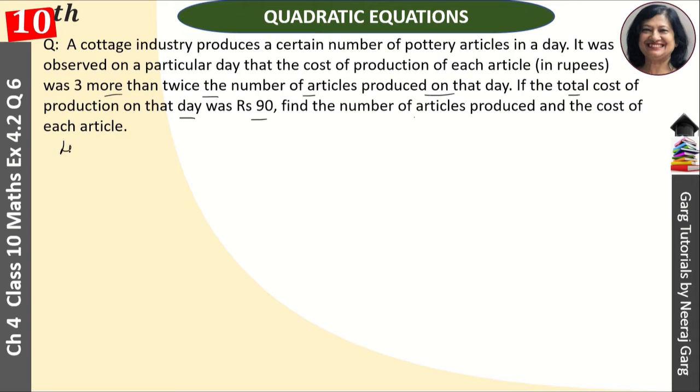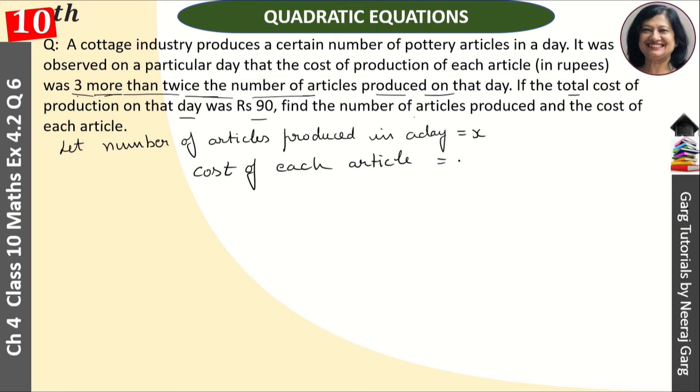Let number of articles be x and cost of each article, that is equal to—we say cost is 3 more than twice the number of articles produced on that day. Twice of number means 2x and that is 3 more, so 2x plus 3. This is our cost. And the total cost given is 90 rupees.